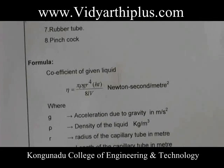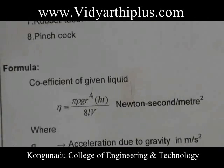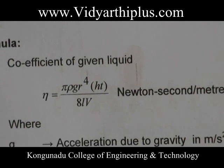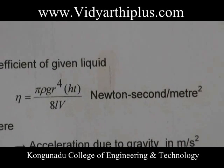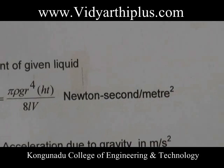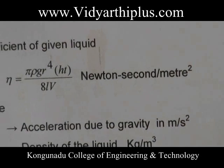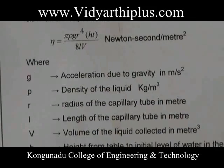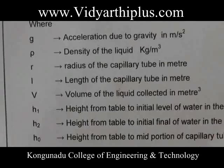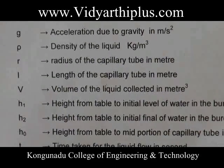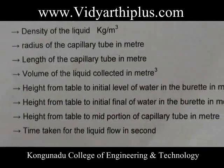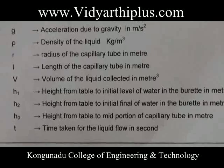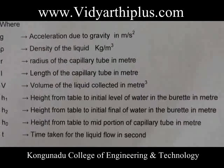The coefficient of viscosity is determined using the formula: eta = (pi × rho × g × r^4 × h × t) / (8 × l × v). Here, pi is a constant, rho is the density of water, g is also a constant, r is the radius of the capillary tube, ht is obtained from the tabulation, l is the length of the capillary tube, and v is the volume of liquid, which is 5 × 10^-6 m³.